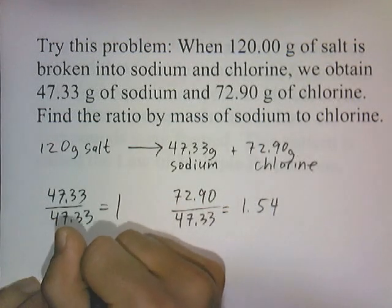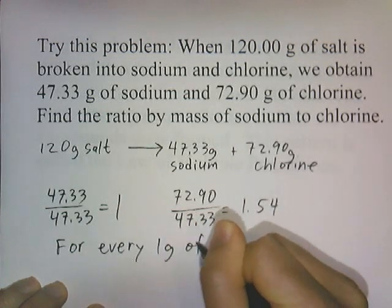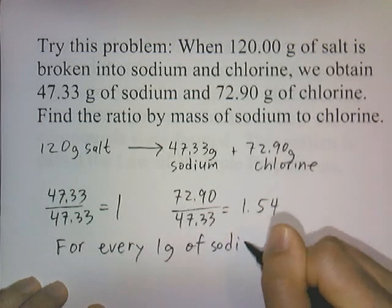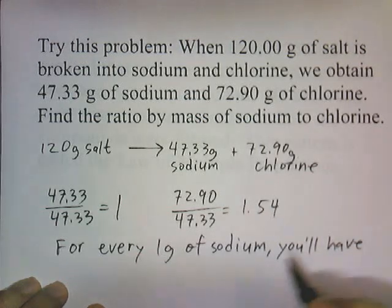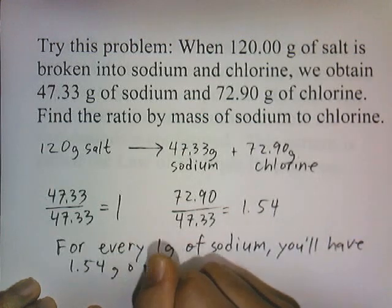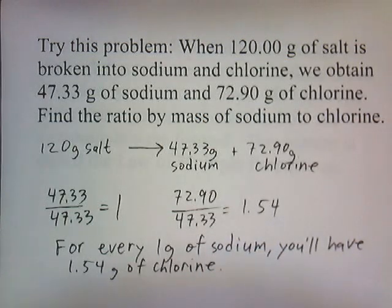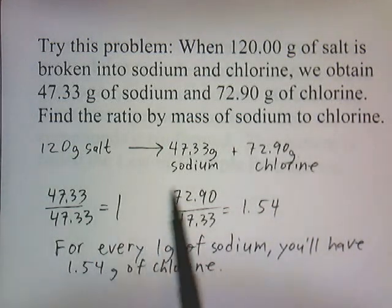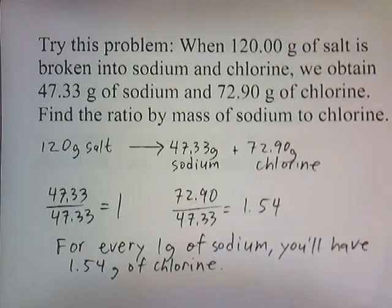For every 1 gram of sodium, you'll have 1.54 grams of chlorine. This is going to hold true in all samples of salt — every sample of salt, every time you break it apart, the ratio of sodium to chlorine will always be 1 to 1.54. So, the proportions are always definite. That's the Law of Definite Proportions.